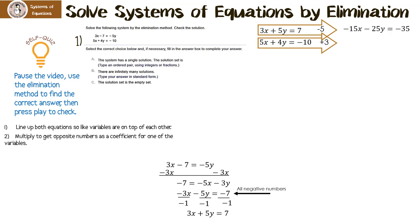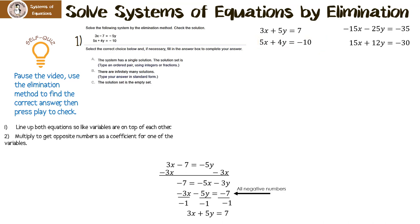Negative 5 times 3x is negative 15x, negative 5 times 5y is negative 25y, and negative 5 times 7 is negative 35. Then 3 times 5x is positive 15x, 3 times 4y is positive 12y, and 3 times negative 10 is negative 30. When I add straight down, I end up with 0x minus 13y equals negative 65. I got rid of the x's.